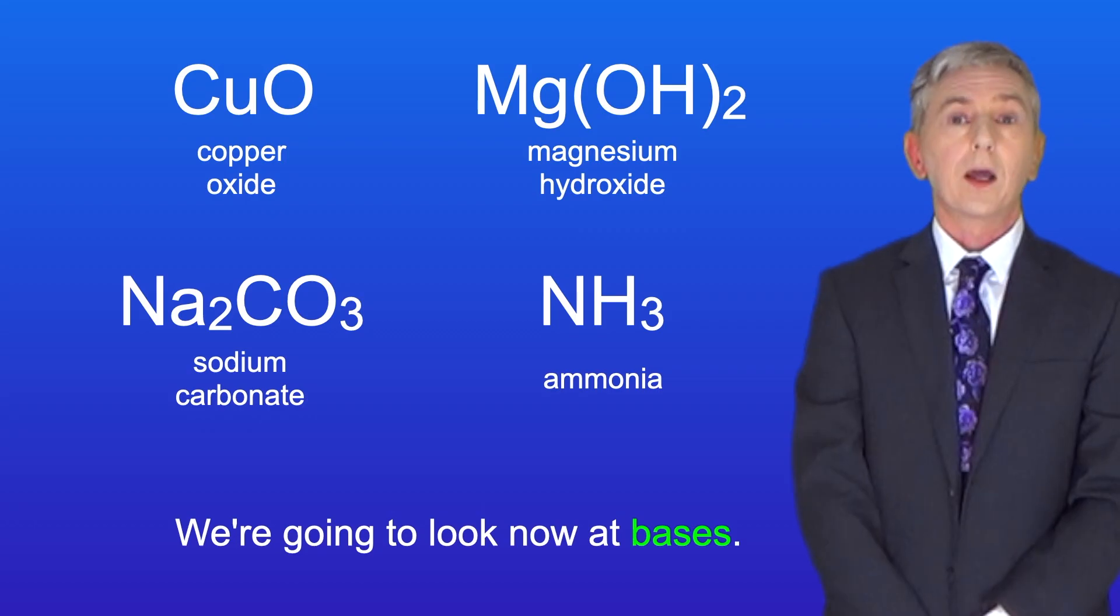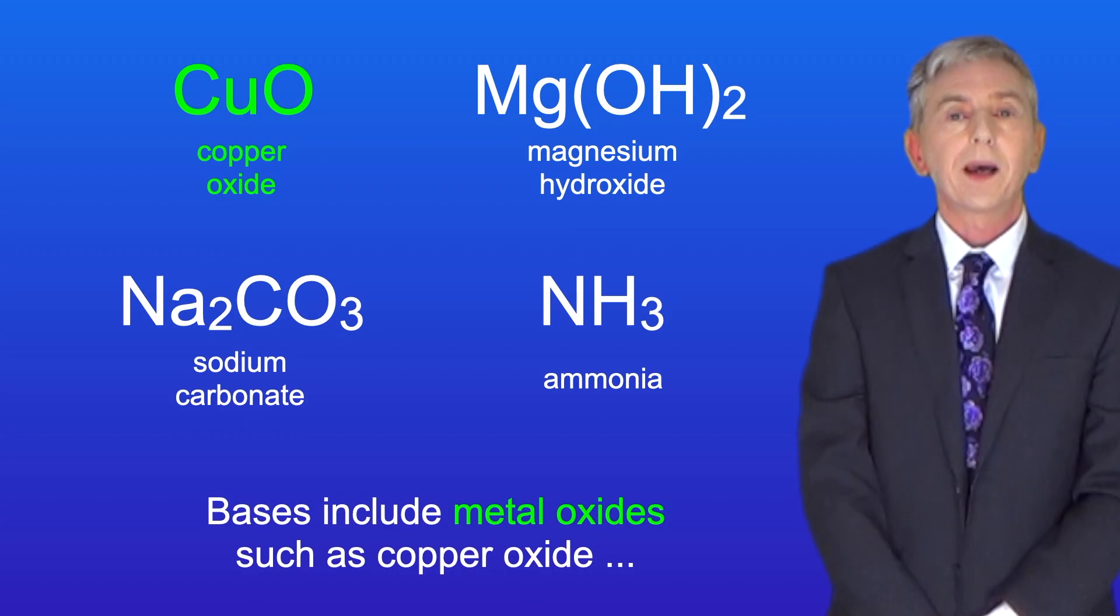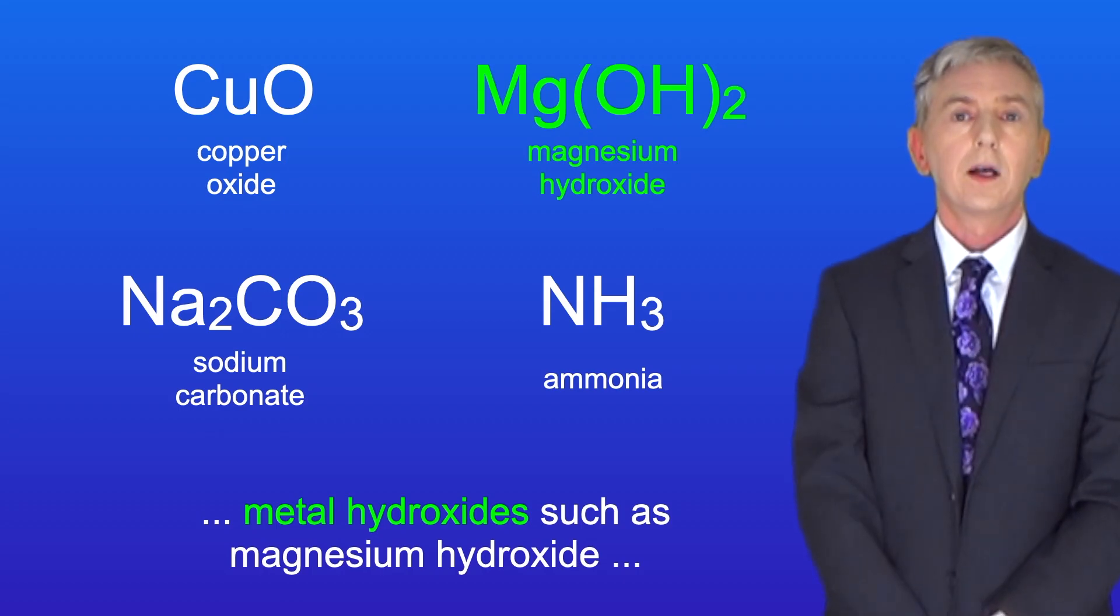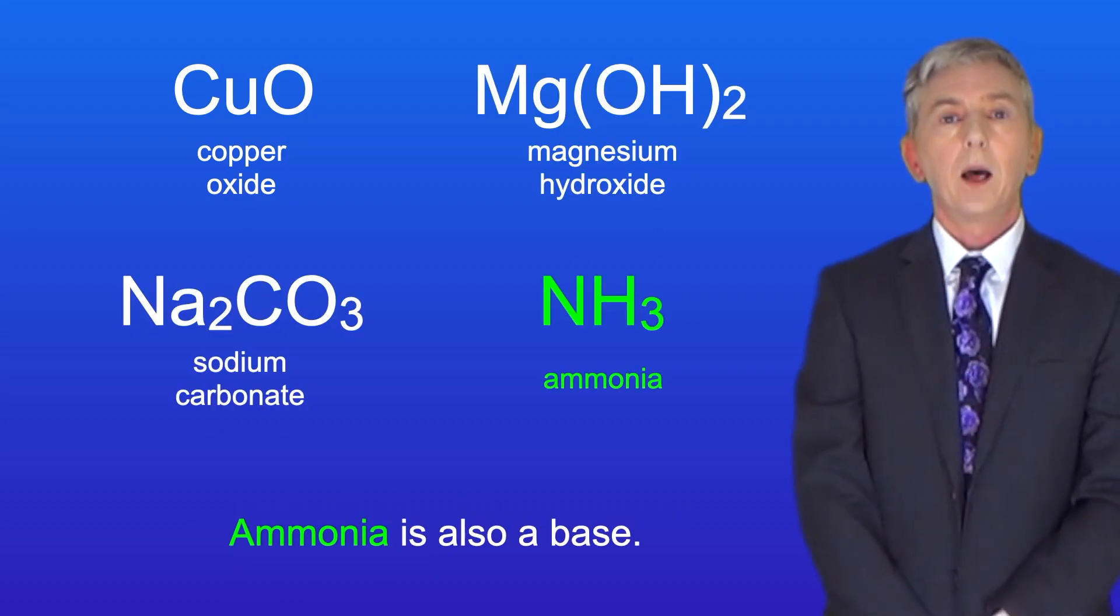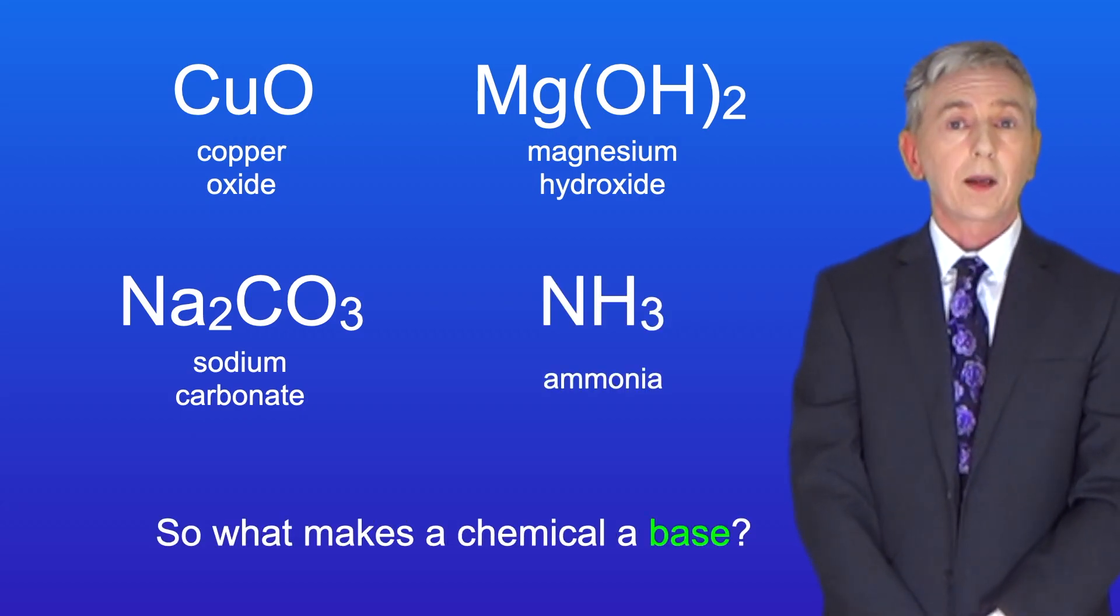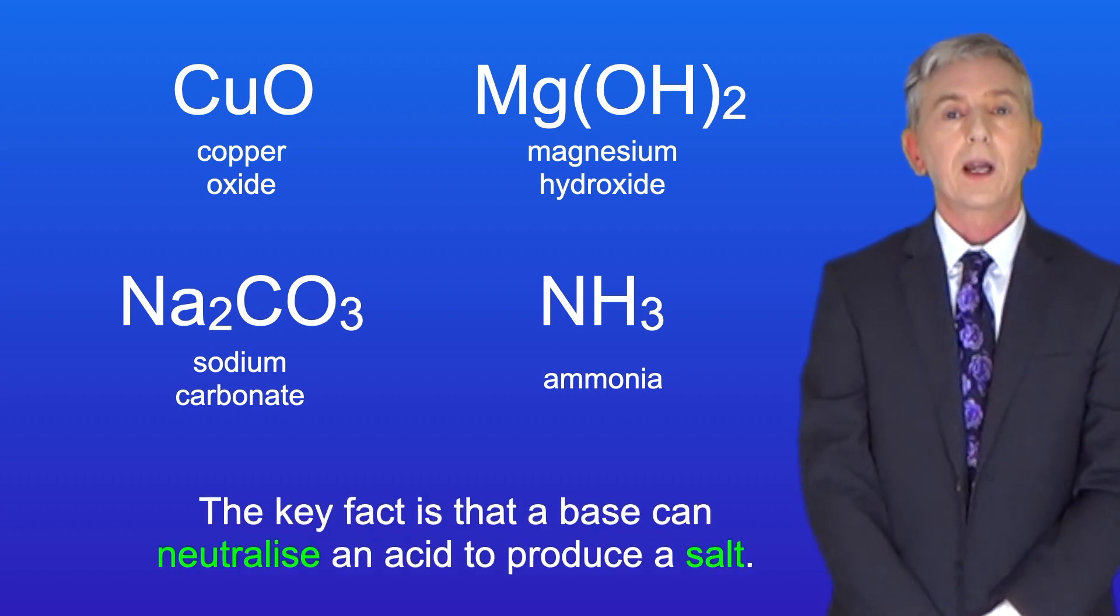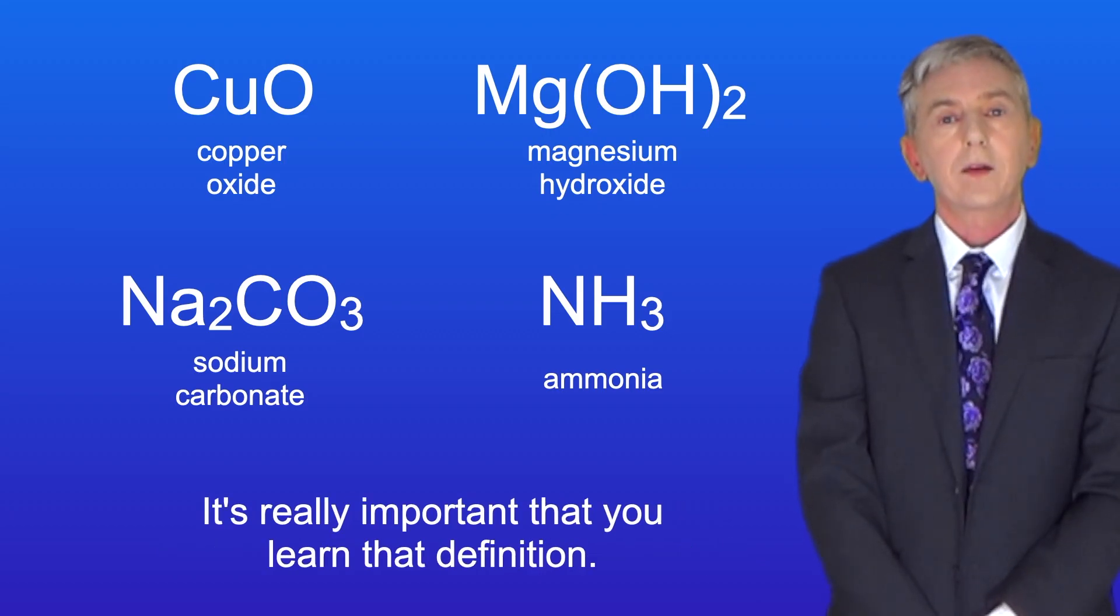Okay we're going to look now at bases. I'm showing you four bases here. Bases include metal oxide such as copper oxide, metal hydroxide such as magnesium hydroxide, and metal carbonate such as sodium carbonate. Ammonia is also a base. So what makes a chemical a base? Well the key fact is that a base can neutralize an acid to produce a salt, and it's really important that you learn that definition.